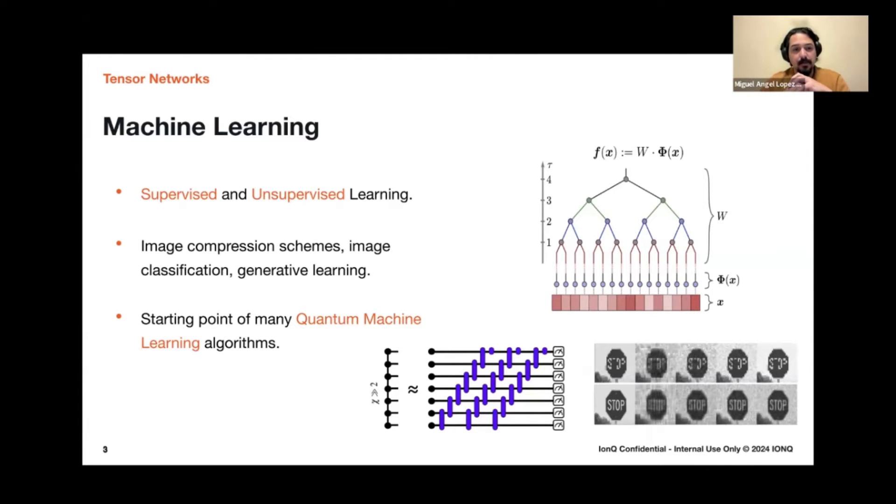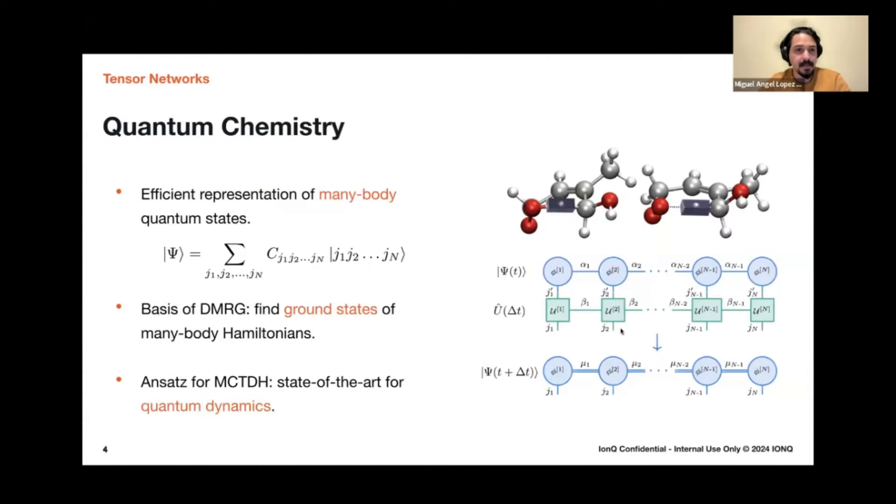So with these techniques, you can do image compression, image classification, or generative learning. They're also used as the starting point of many quantum machine learning algorithms. So here I'm showing an example of how a tensor network can be written as a quantum circuit for an image classification problem that one of our colleagues here worked on very recently.